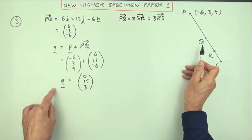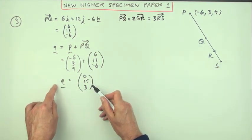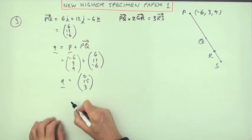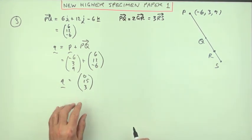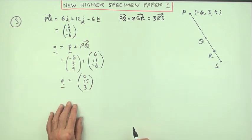Now that's the position vector of Q. Now I've actually found it so I'm clinging on to it just now, but I don't think I need to actually write down the coordinates of Q - you do if you like, because I'm not finished yet.